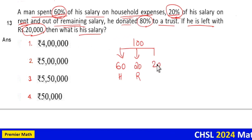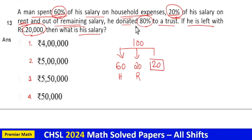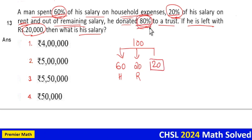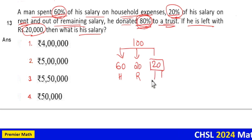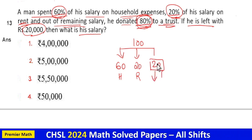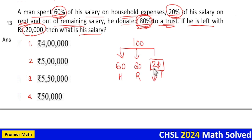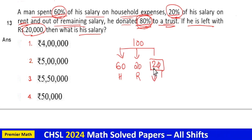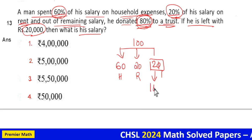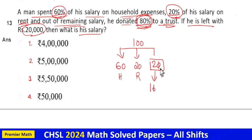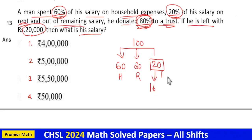Out of this 20 rupees, he donated 80% to a trust. 80% of 20: 10% of 20 is 2, so 2 into 8 is 16. So he donated 16 rupees to the trust.